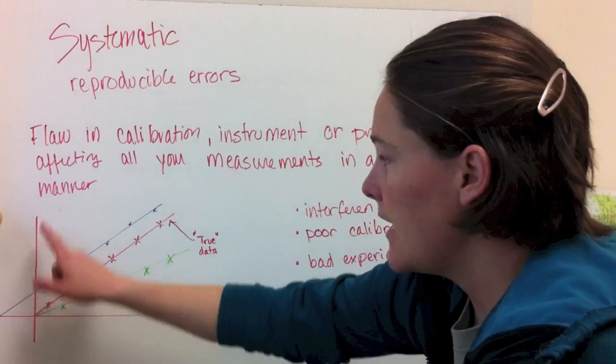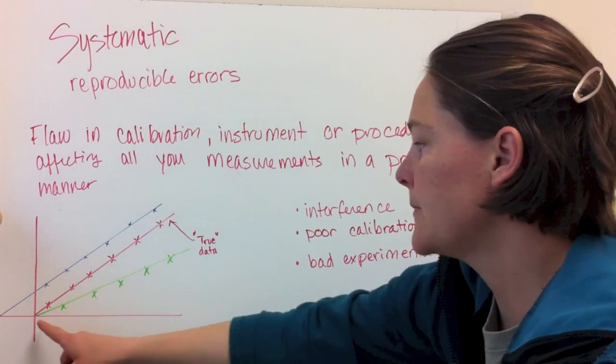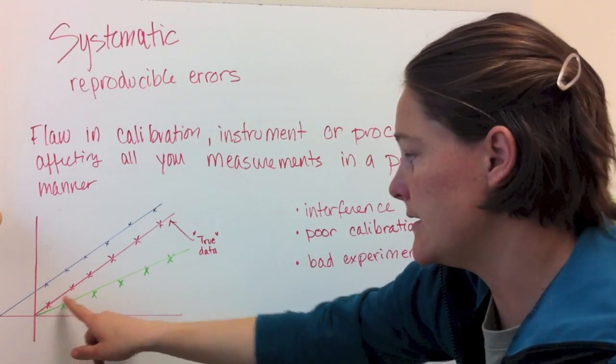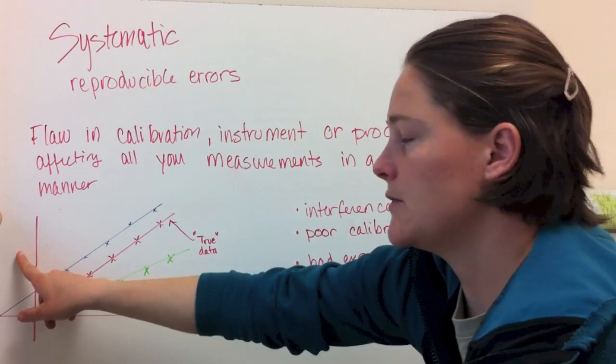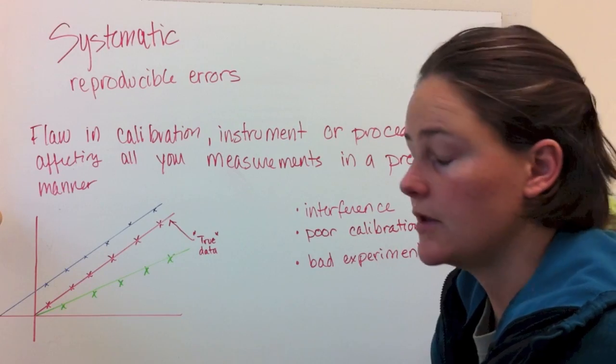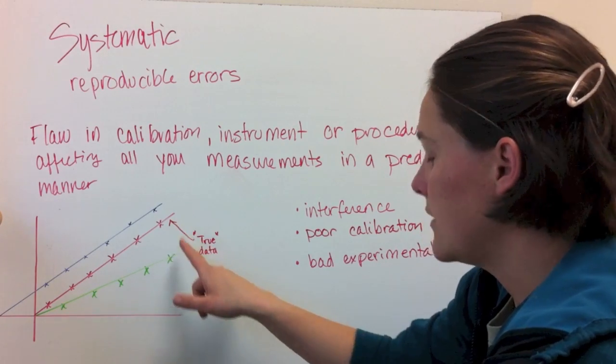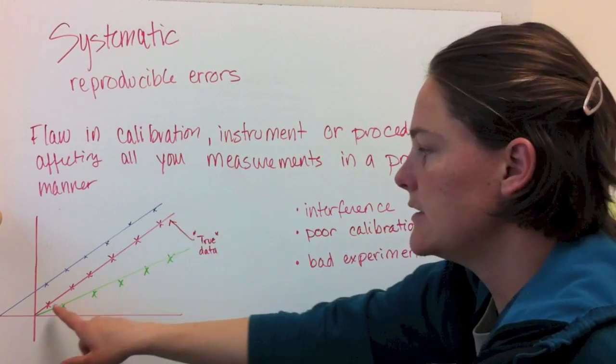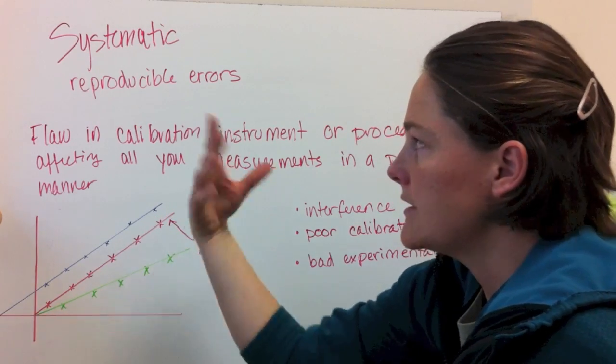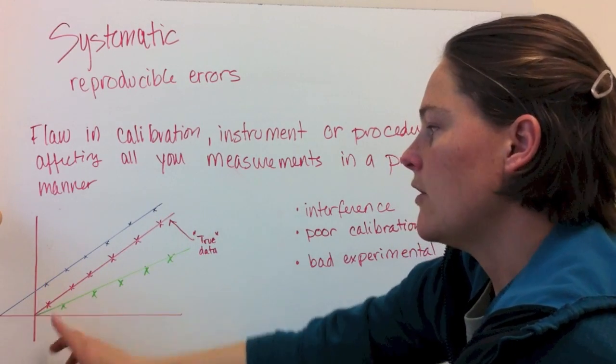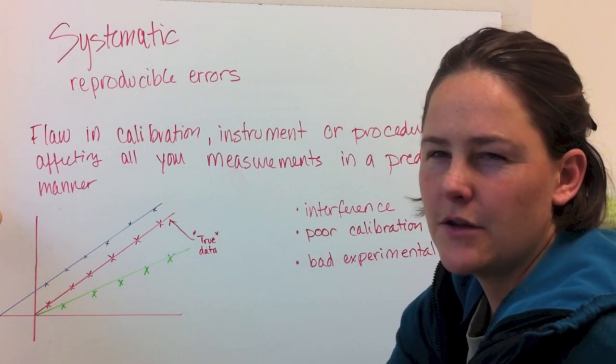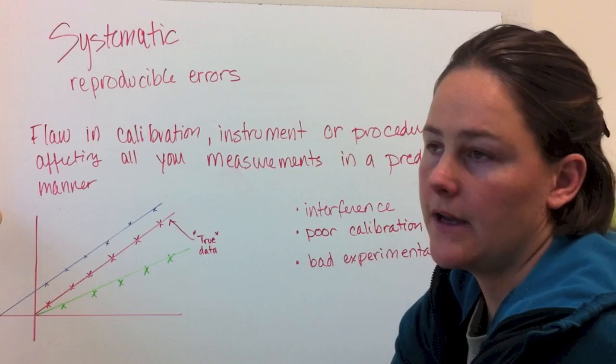So if you have a graph where you're correlating where these are your true measurements, say it's a concentration and absorbance or something like that that we're going to do in some of the labs this year or this semester. So say these are your true measurements in pink. Well, a systematic error would cause either all of your measurements to go up or it might change the slope. And those are the types of things that you want to be looking out for.